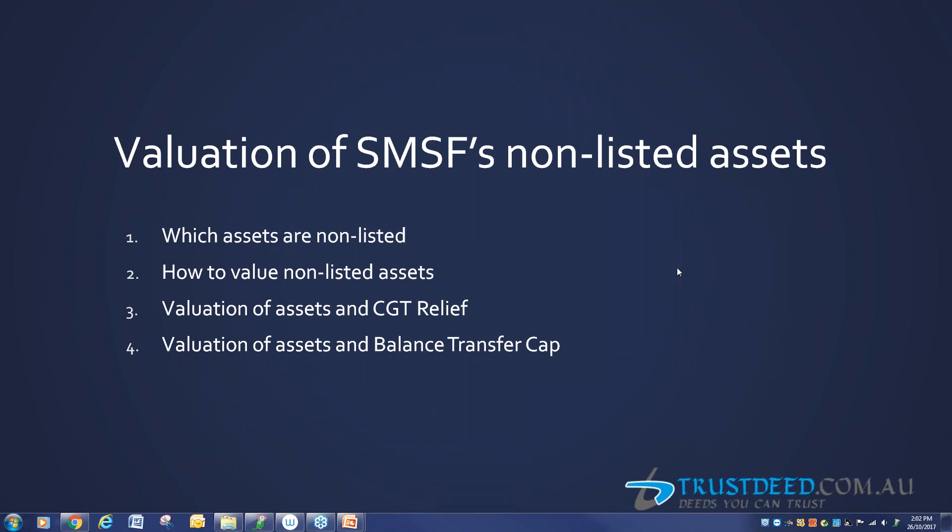Valuation is particularly important for 30 June 2017 because of the CGT relief which is available, and it's an opt-in. The problem with opt-in is that once it's chosen it is irrevocable. That means if you have decided to reset the cost base of an asset, the market value on that date becomes the new cost base, and any future gain on that asset will be taxable only from that point forward.